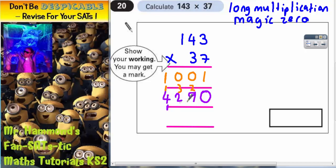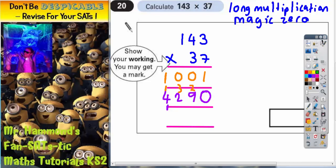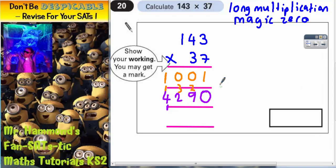So that's 4,290. Now the final row is the obvious one. On this row we've done 7 lots of 143. On this row we've done 30 lots of 143. So the final row is where we put the two answers together to get 37 lots. We need to add these two together now.